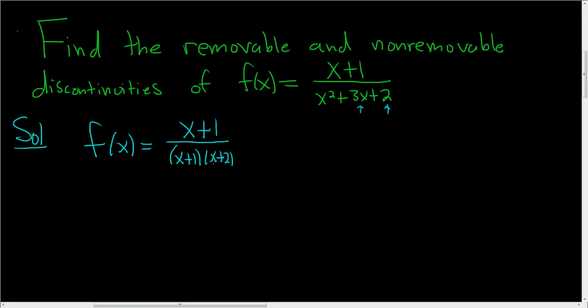We're asked to find the removable and non-removable discontinuities. You could take a limit here, and basically if you take the limit as x approaches c of f(x), and you get L, and c is a discontinuity of f, and this limit exists, then it's removable. If the limit does not exist, it's not removable.